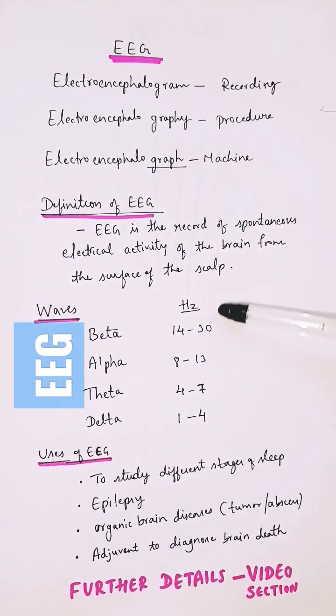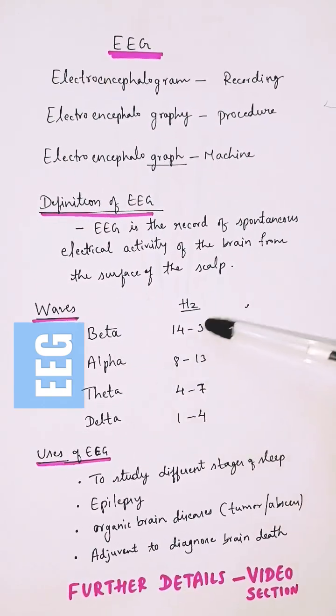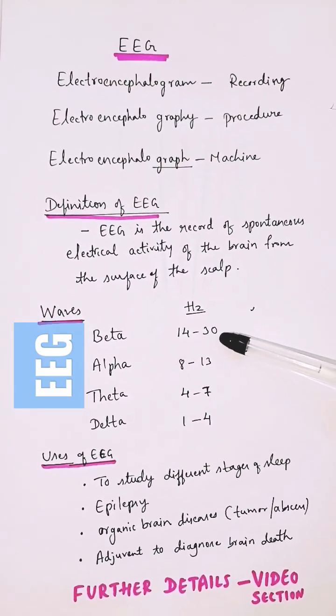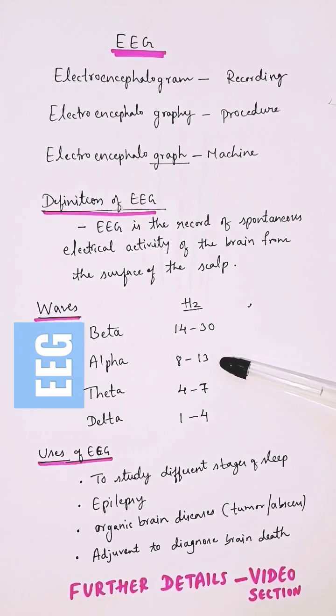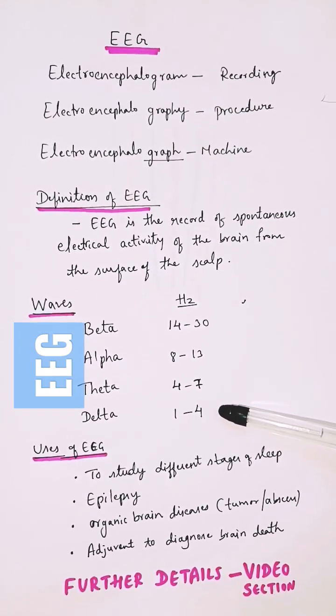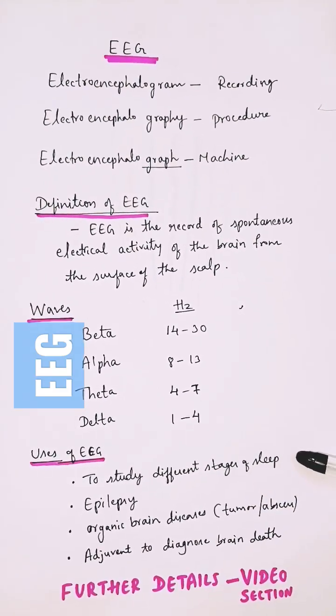There are four waves in EEG: beta, alpha, theta, and delta, arranged by frequency. Beta waves are 14 to 30 Hertz, alpha 8 to 13, theta 4 to 7, and delta 1 to 4 Hertz.